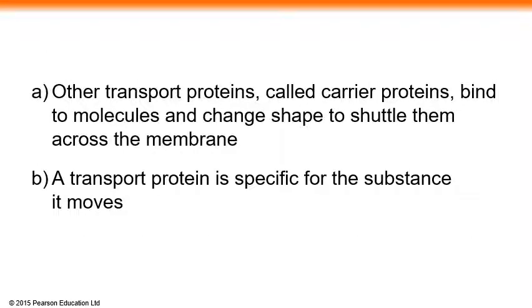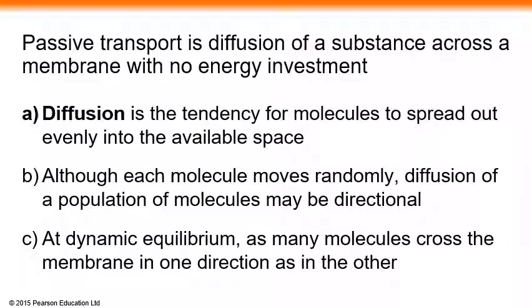Other transport proteins, called carrier proteins, bind to molecules and change shape to shuttle them across the membrane. A transport protein is specific for the substance it moves. There are two types of transport through the biological membrane: one is passive transport, and the other is active transport.